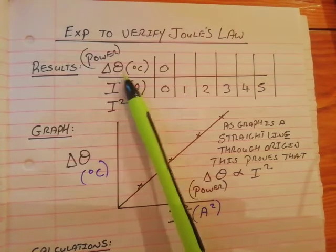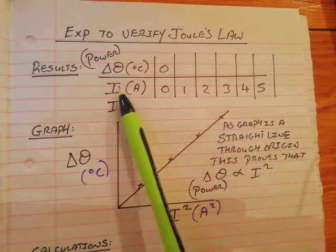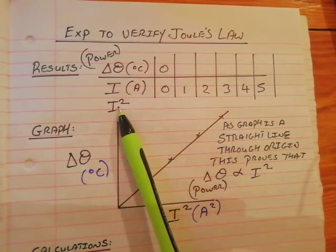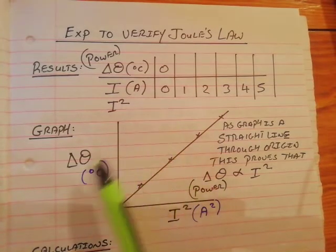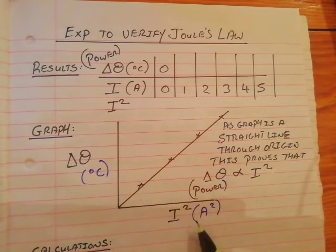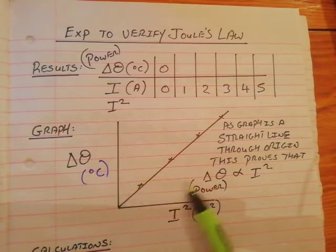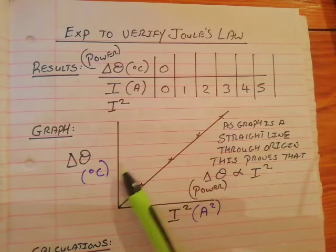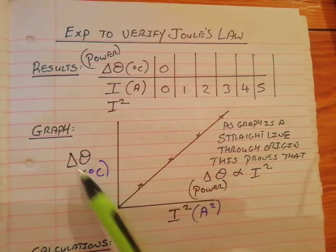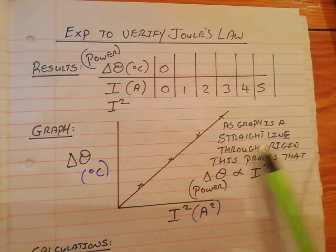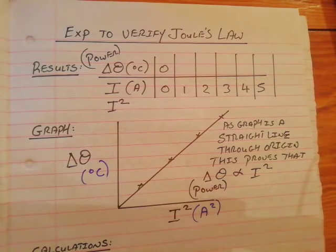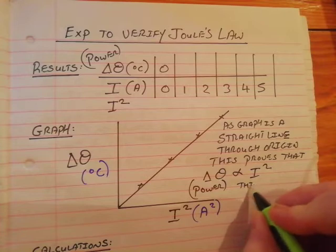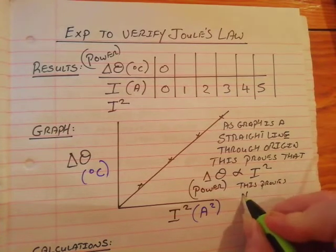Normally in the Leaving Cert, they give you rises in temperature and the current — you have to square the current and then plot this graph. An obvious question they would ask is: how do you know the relationship between these two things? As the graph is a straight line, this proves rise in temperature is proportional to current squared, which — if rise in temperature is taken as an indication of power — proves Joule's Law.